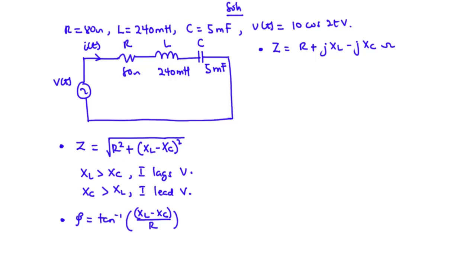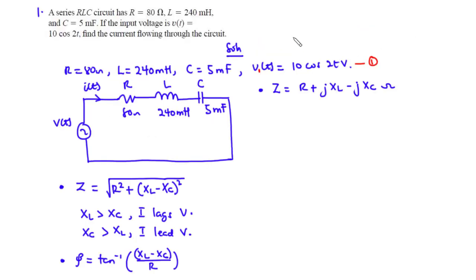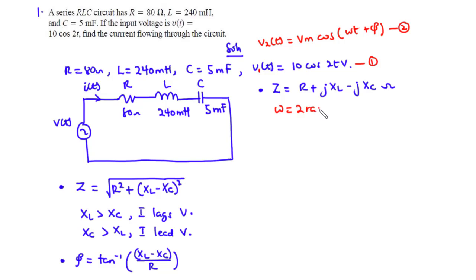To find the impedance of this circuit, we have the value of R which is 80 ohms. We need to find XL and XC. From the voltage signal V(T) = 10 cos 2T, comparing this to the general form of a sinusoidal signal V(T) = Vm cos(ωT + φ), we find that omega is equal to 2. Therefore, omega is 2 rad per second.